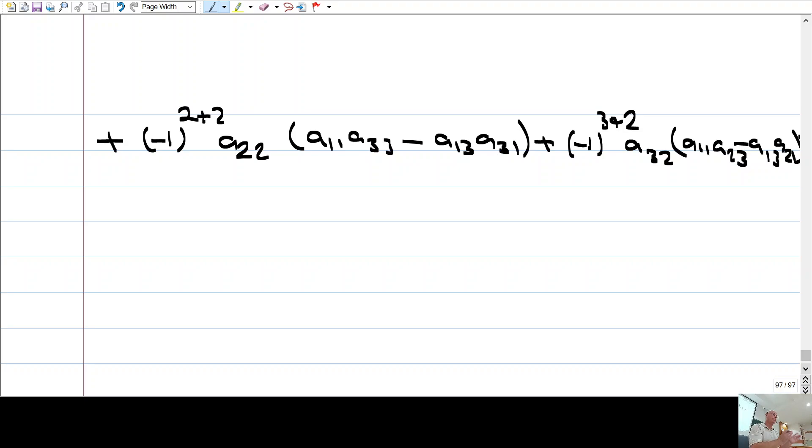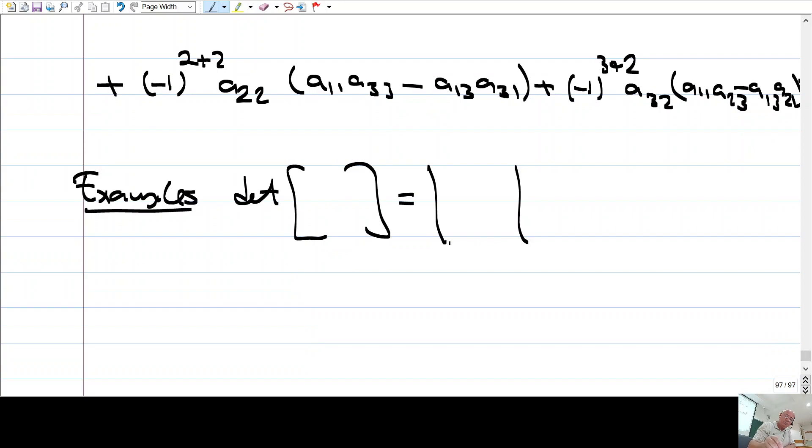So, there is a cross product in R3. You have seen in maybe high school, but there is no other cross product. Okay. Let's see some examples of determinants. Let's, for example, let's see, notation, we can write determinants like this, or sometimes simply just like this.